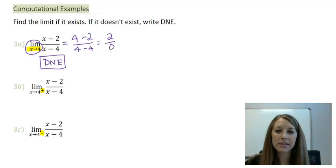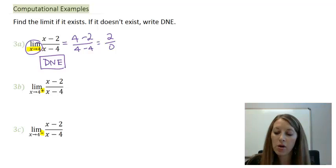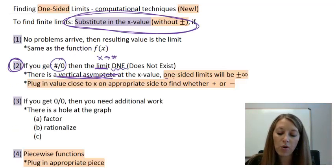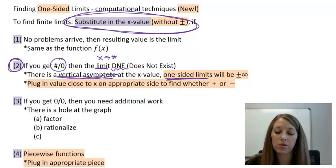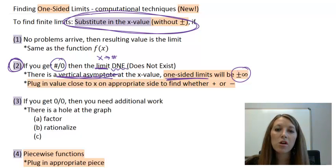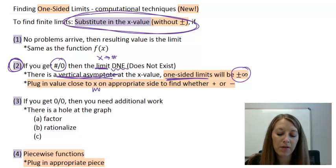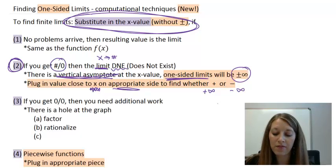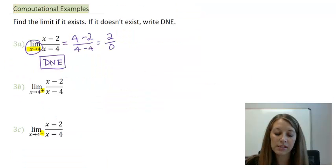That gives us insight into parts B and C, but not the exact answers. For one-sided limits, the answer will be positive or negative infinity because our graph follows the vertical asymptote. To figure out which side gives which, we plug in a number very close to x on the appropriate side to see whether the answer is going to be positive infinity or negative infinity.